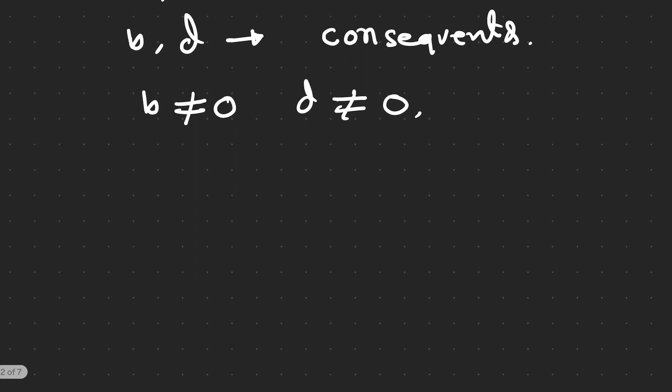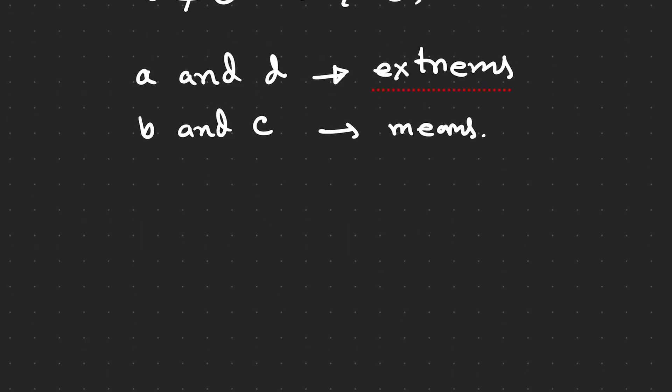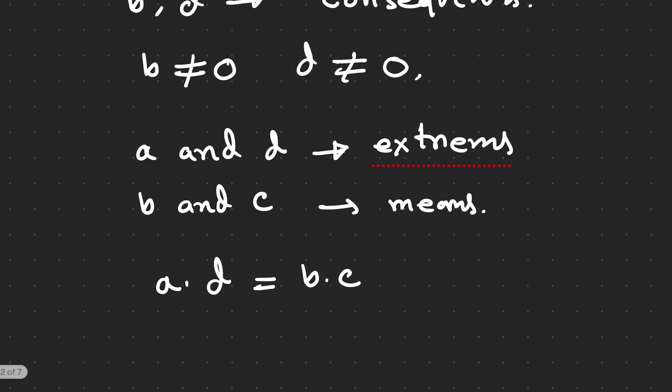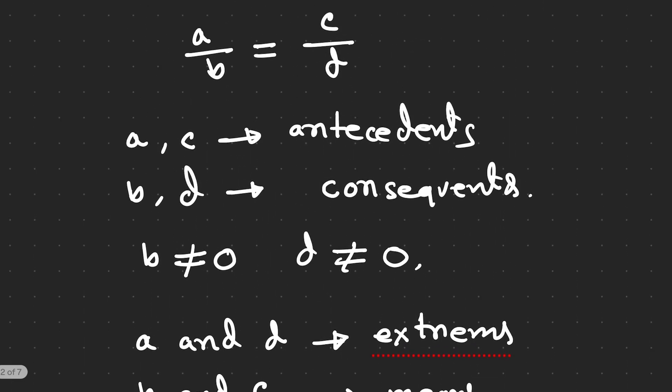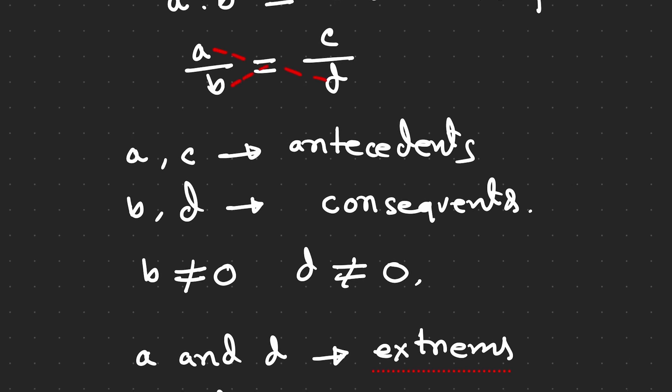So we can write another way: a and d are called extremes, b and c are called means. The product of the means equals the product of the extremes. So we can write a times d equals b times c. This is just the rule we often do in algebra—we multiply them. We often do that in mathematics when we do operations.